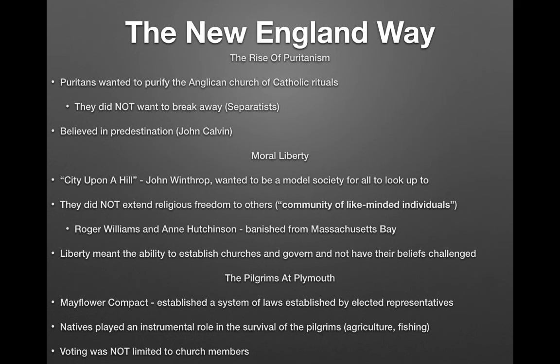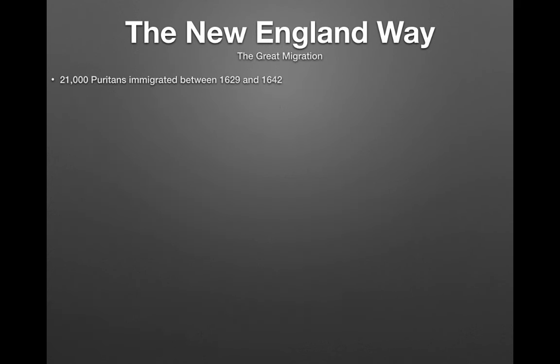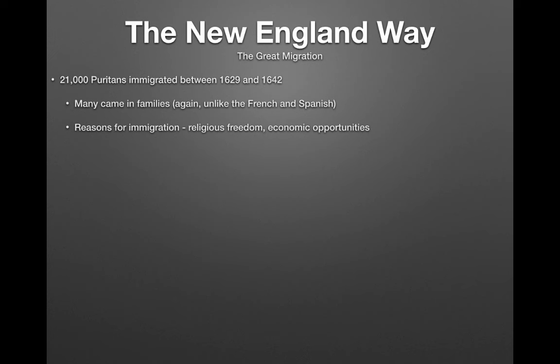During the Great Migration between 1629 and 1642, about 21,000 Puritans came to America — many in families. This is unlike the French and Spanish, who tended to only send men. Reasons for immigration included religious freedom and economic opportunities.